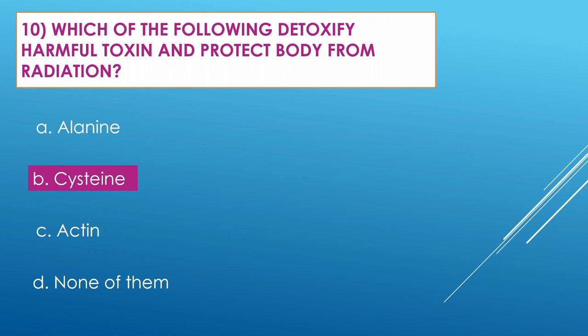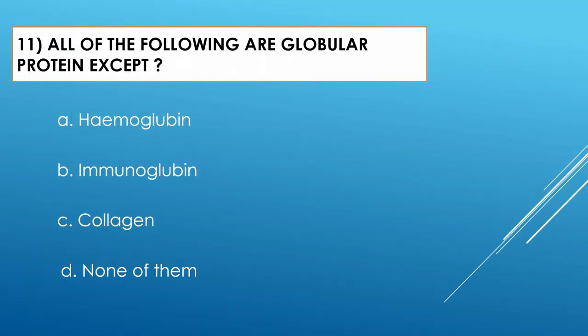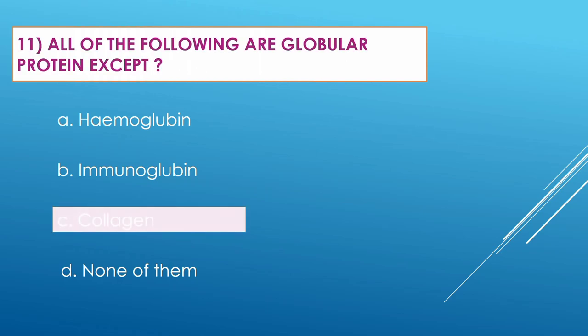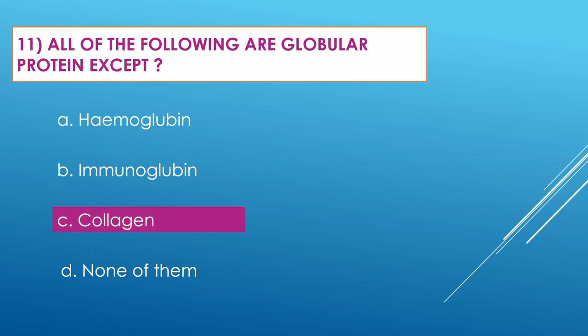Question number eleven: All of the following are globular proteins except — Option A: hemoglobin. Option B: immunoglobulin. Option C: collagen. Option D: none of them. The correct option is collagen, which is not a globular protein.